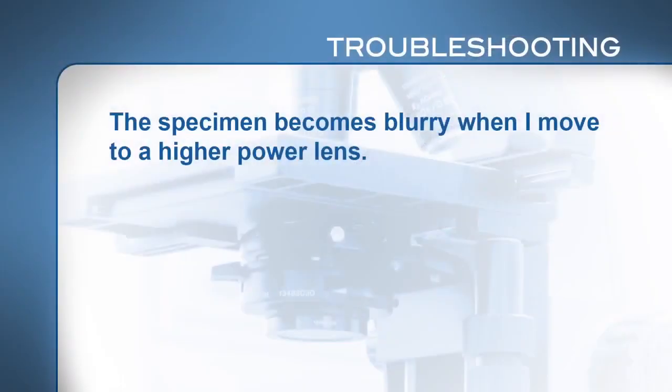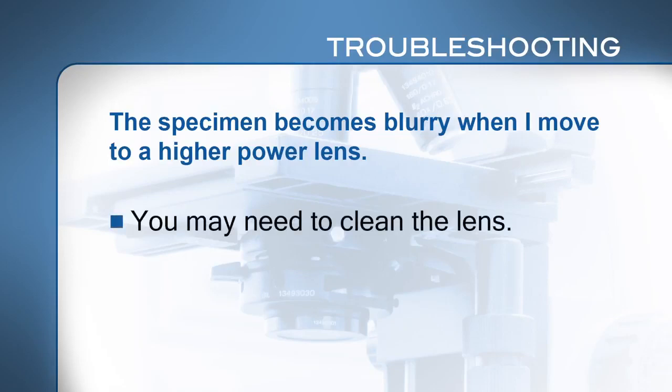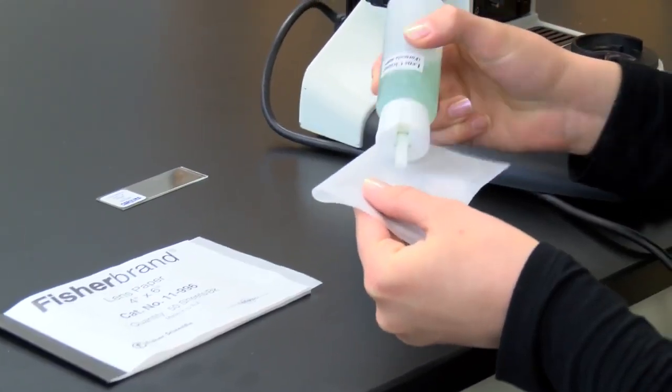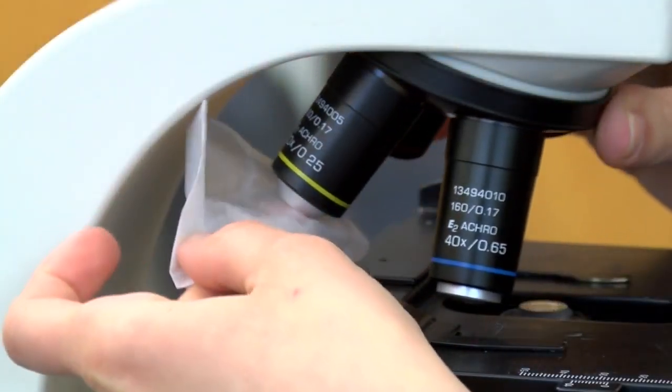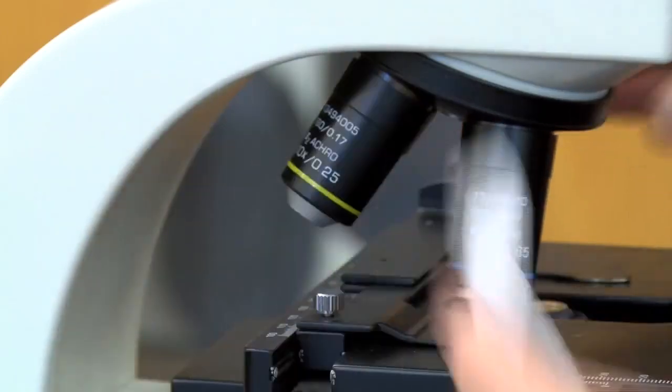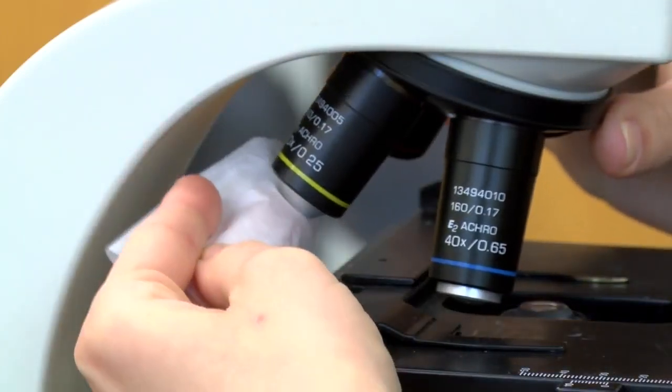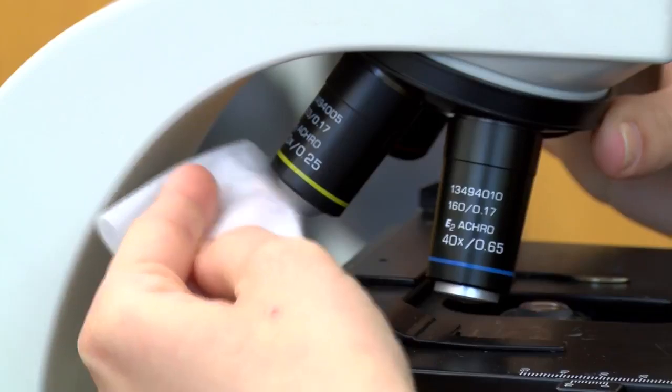If when you move to a higher power lens the specimen becomes blurry as though it were coated with Vaseline and you cannot focus, you may need to clean the lens. Soak a piece of lens paper, and only lens paper, with lens cleaner and wipe the lens. Then wipe dry with clean lens paper. Repeat a couple times. If this doesn't solve the problem, check with your instructor.